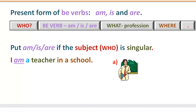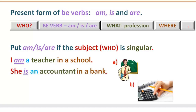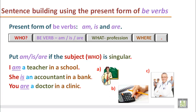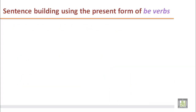Especially if it is a person, like: I am a teacher in a school. You can see the picture — he is our teacher and he is saying 'I am.' It is the present tense of the BE verb. She is an accountant in a bank — here the person is she and the BE verb is 'is.' You are a doctor in a clinic — this 'you' is singular, referring to a single doctor. Yet we have to put 'are' because the pronoun 'you' always requires 'are,' whether it refers to a single subject or a plural one.